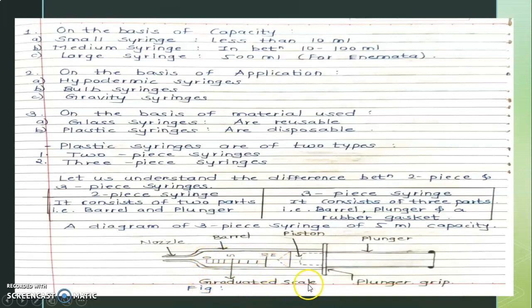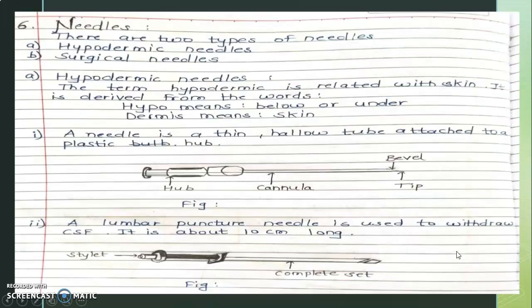The syringe has a graduated scale. The actual solution is held in the barrel. The solution is pushed by the piston. By a to-and-fro motion of the piston — which is the plunger — medicines are incorporated into the body. The plunger grip is held during injection. That covers the two-piece and three-piece syringes.